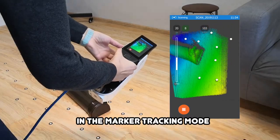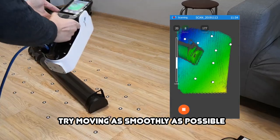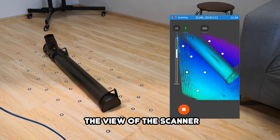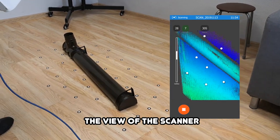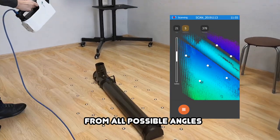While scanning an object in the marker tracking mode, try moving as smoothly as possible. Make sure that you have at least five markers in the view of the scanner. Try to capture as much data as possible from all available angles.